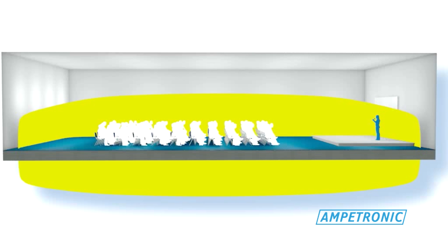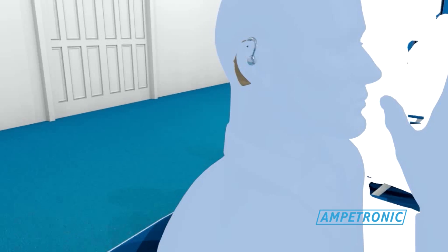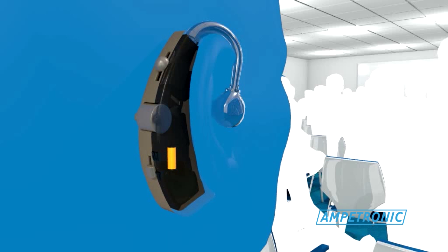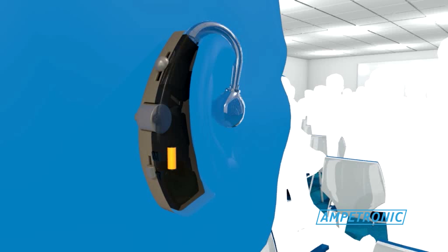International Standard stipulates performance for field strength and consistency throughout the listening area. The magnetic field induces a current in the telecoil, which is then translated into audio by the hearing aid, transferring it directly to the ear canal using the hearing aid's own speaker.